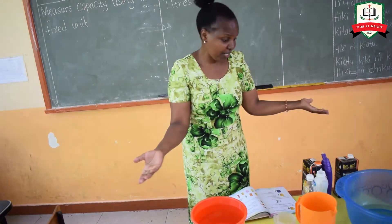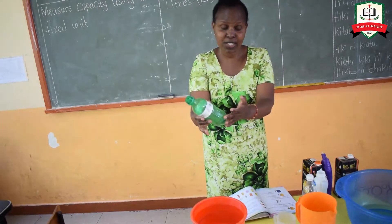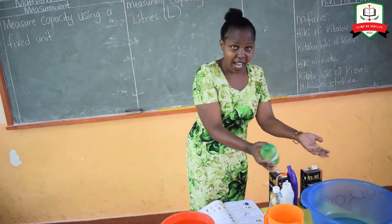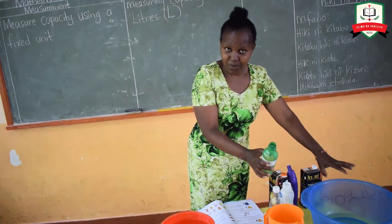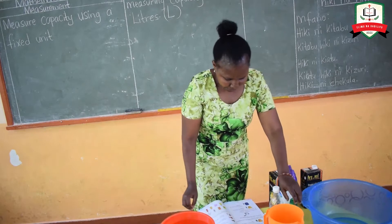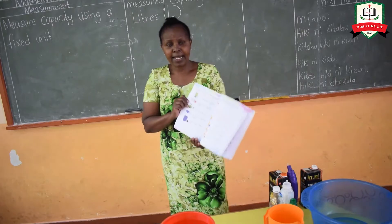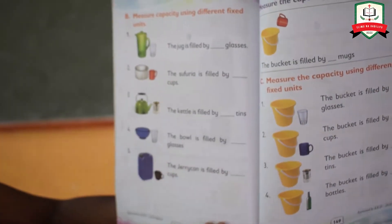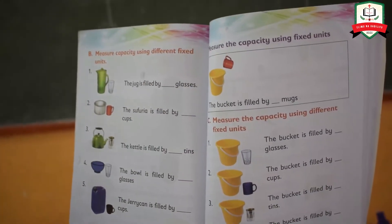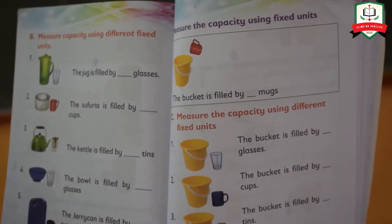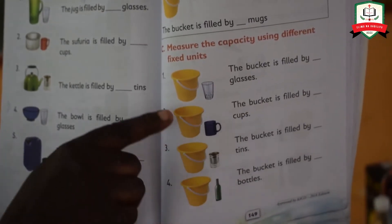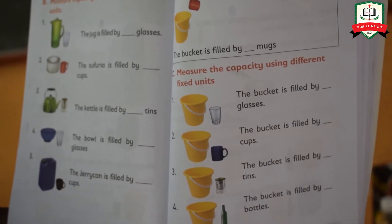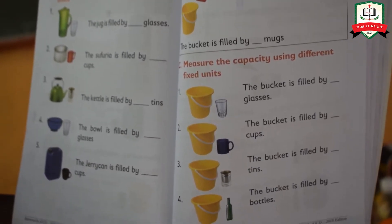You can use different units. You can use a bottle, and try to see how many bottles will fill your jug or basin — that is how you know the capacity. You can try this activity at home: measure the capacity of a bucket using a glass, a mug, a tin, or a bottle. The one I have demonstrated here shows a bucket filled by a certain number of mugs or cups.